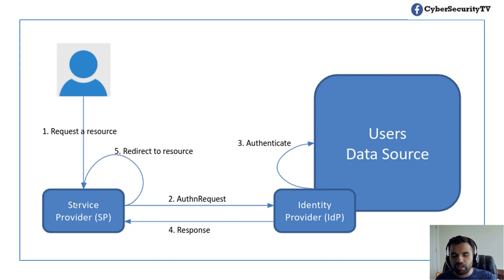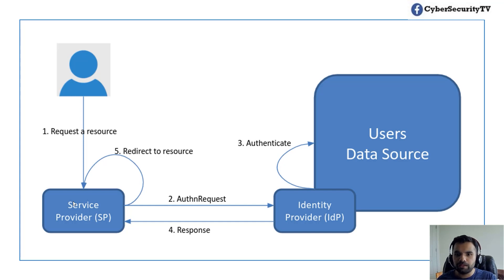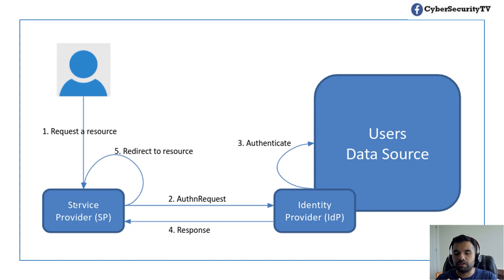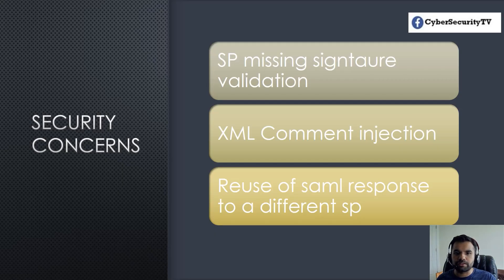One other thing worth mentioning: there are times where you have one IDP for different service providers. On the web there are hundreds of different sites, and many of them use the same IDP. In a corporate network, you might have one identity provider that gives access to multiple service providers — a one-to-many relationship. The reason I explain this is because you might find security vulnerabilities and authentication flaws when you have this one-to-many mapping without good validation.